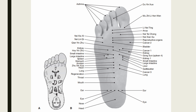The regeneration point is located 0.6 unit distal to the throat point, or 4.2 units from the heel. Indications include tumors on the brain or spinal cord, and painful conditions such as bi-syndrome associated with muscles, tendons, and bones. The heart point is located 0.6 unit distal to the regeneration point, or 4.7 units from the heel. Indications of the heart point include high blood pressure, heart failure, tonsillitis, tongue ulcers, insomnia, and excessive dreaming.